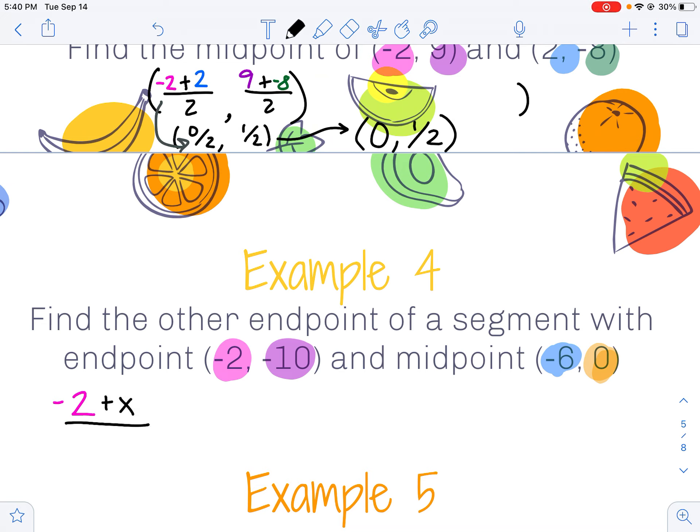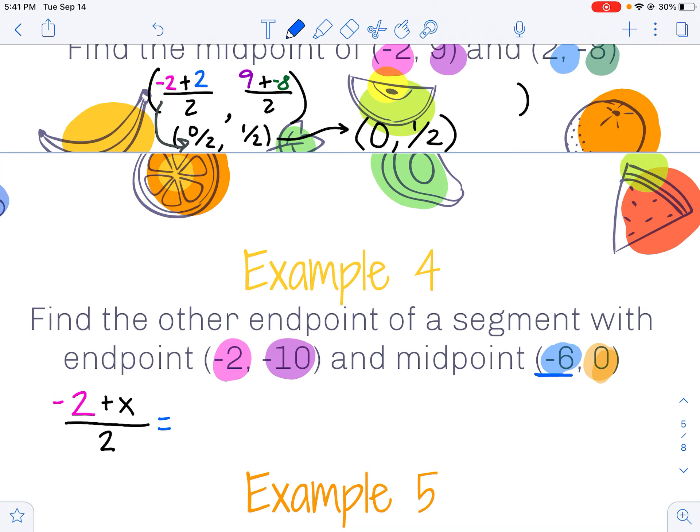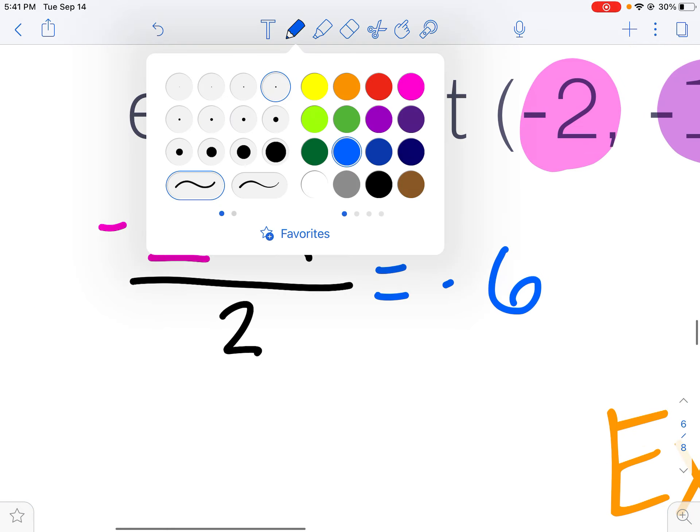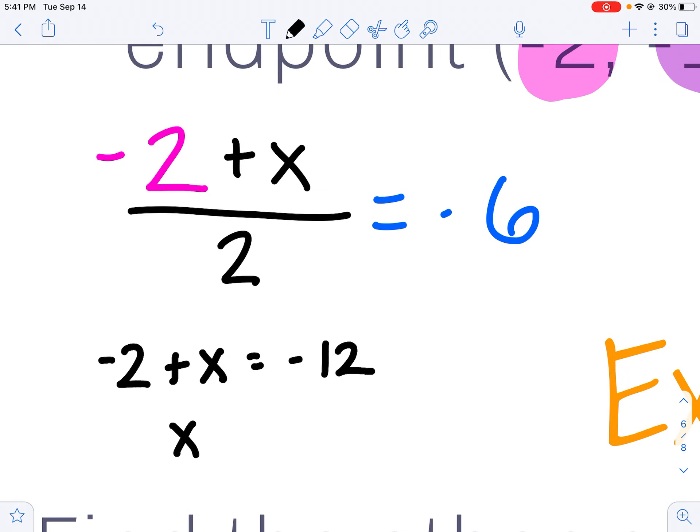And I know that if I take negative 2, add x to it, and then divide it by 2, that has to work out to equal my midpoint's x value, negative 6. And now I can go ahead and solve that using algebra. So I can multiply both sides by 2, and then add 2 over.